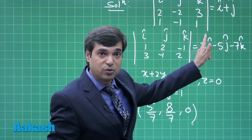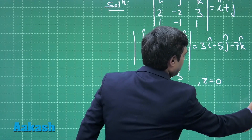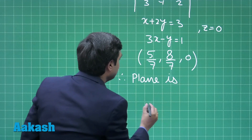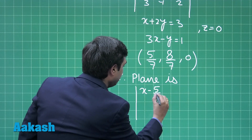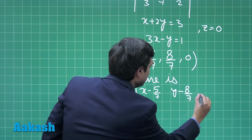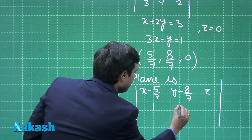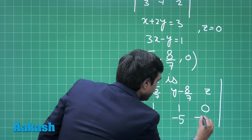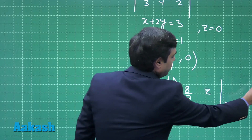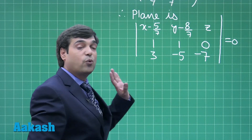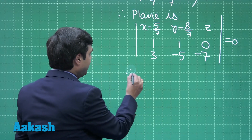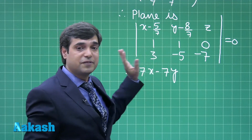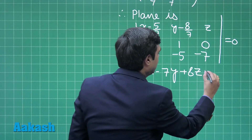We have the point and the direction ratios of both lines. The required plane is given by the determinant with row (x - 5/7, y - 8/7, z), row (1, 1, 0), and row (3, -5, -7) equal to 0. Simplifying this equation gives the plane: 7x - 7y + 8z + 3 = 0.